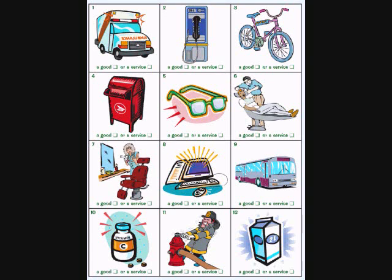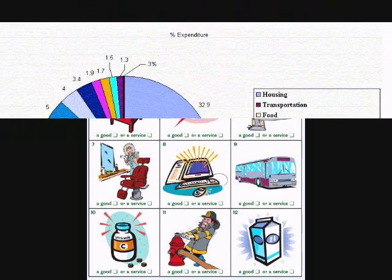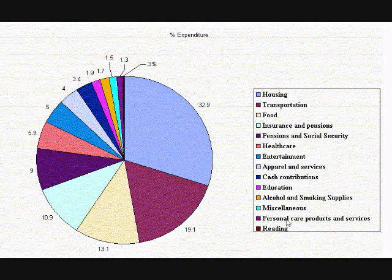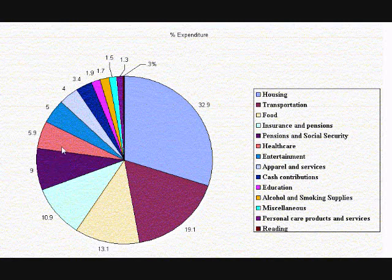Here in the United States, the GDP is recorded by the United States Department of Commerce and reported every three months. Looking at a pie chart, you can see the GDP broken down: about one-third is housing, about 20% is transportation, 13% is food, about 11% is insurance premiums and pensions, about 9% is Social Security, and 6% is health care.